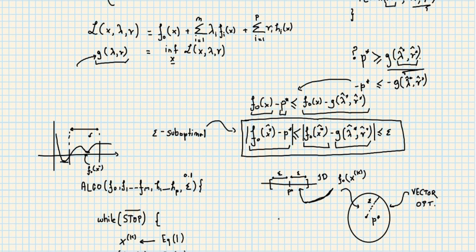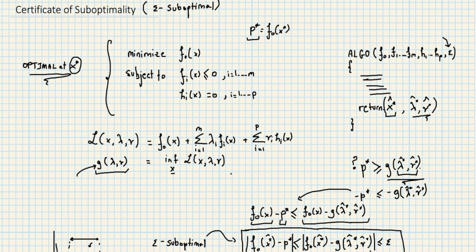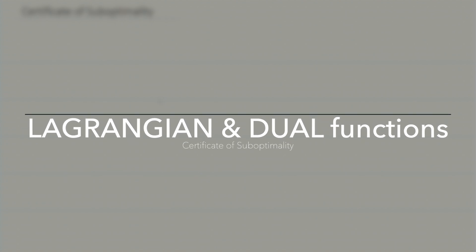At each iteration, given your primal variable x and the Lagrangian pairs lambda and nu, we can get a non-heuristic bound on when to stop. Epsilon here is a given precision parameter — for example, stop when there are no changes up to one decimal point, two decimal points, and so on.